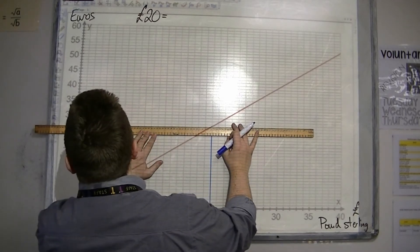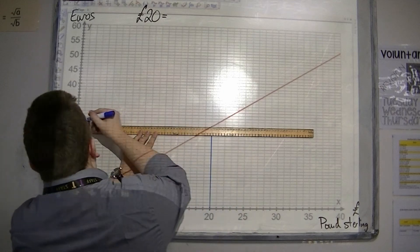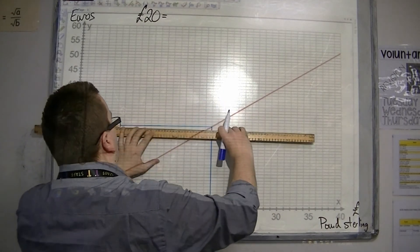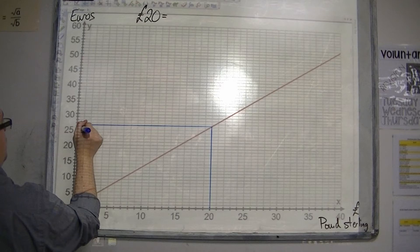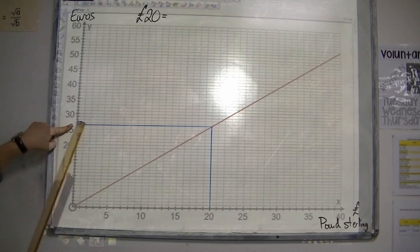draw a horizontal line, in order for you to read off the value that you have here.